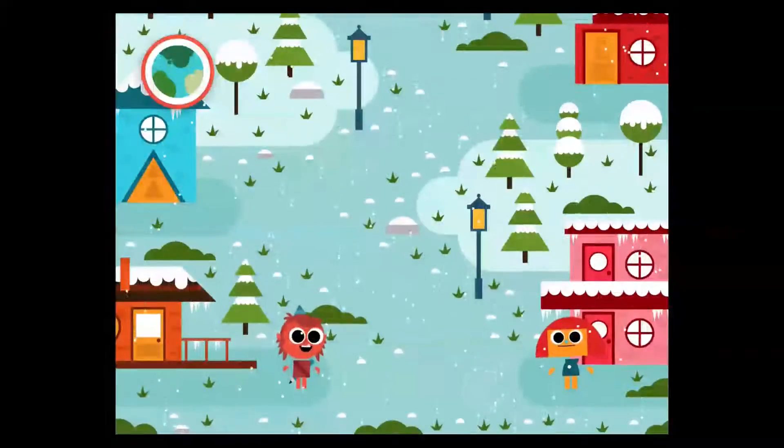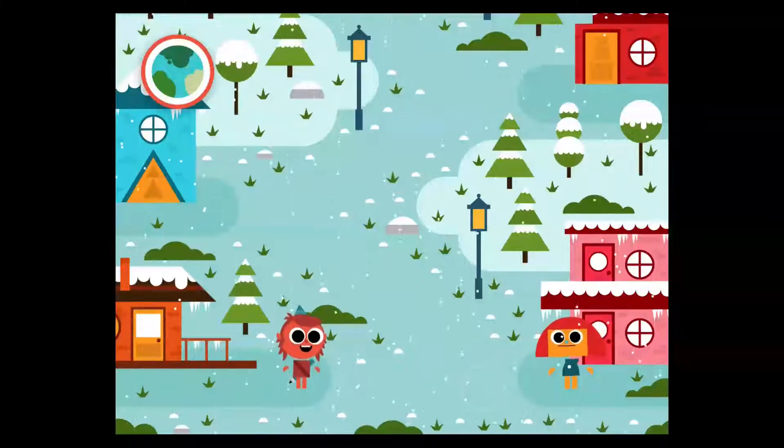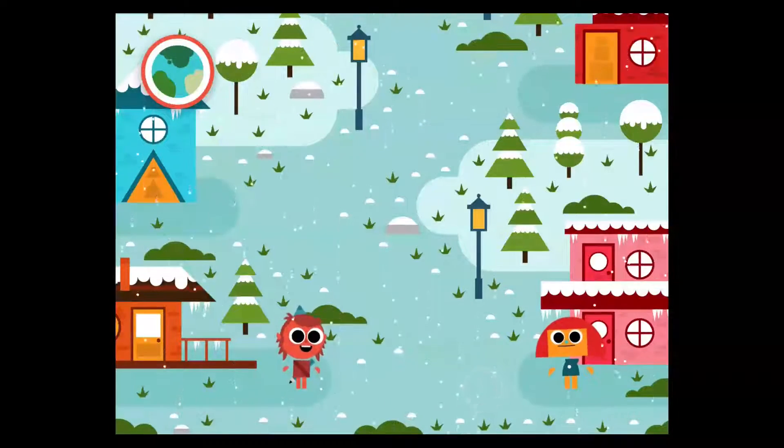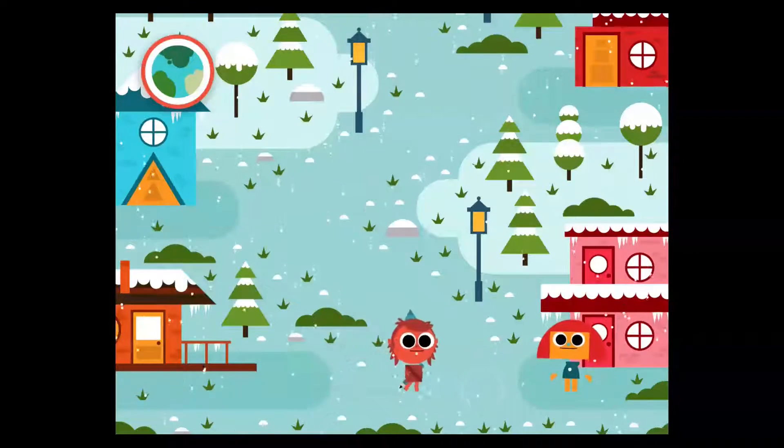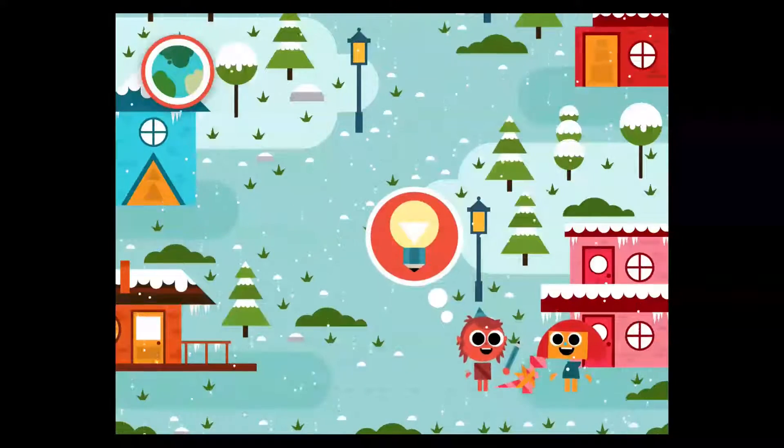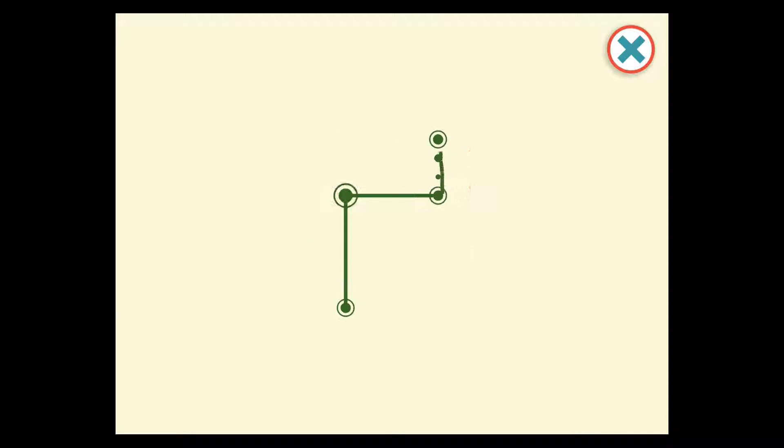In Artie's World, he uses his magic pencil to draw things and make them come real. So let's take Artie over to this girl here. Oh, she wants a present. Let's click there. Hmm, what shape are we making? What do you think this is going to be?